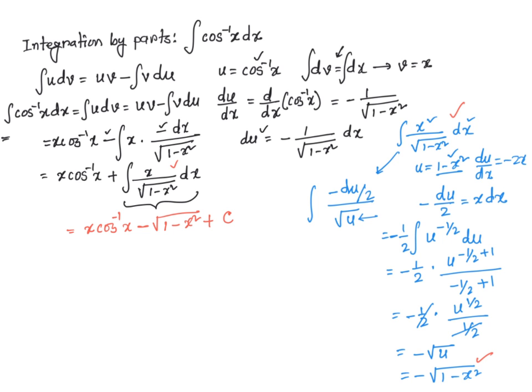So my integral becomes: the integral of cosine inverse of x dx is equal to x cosine inverse of x minus square root of 1 minus x squared, plus some arbitrary constant c. I hope that this discussion was helpful. Thank you very much.